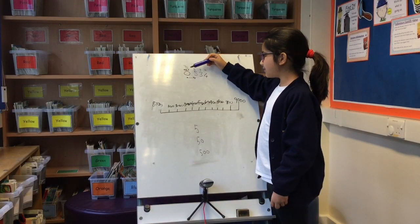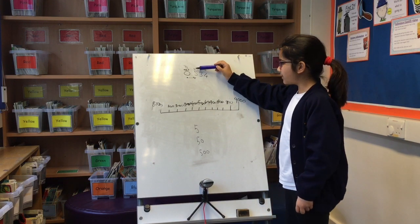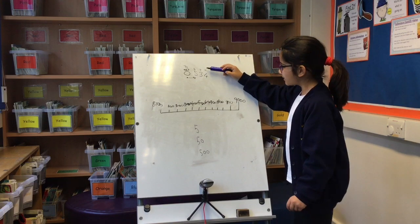When you're rounding to a thousand, you have to look at the hundreds. When you're rounding to the hundreds, you have to look at the tens. When you're rounding to the tens, you have to look at the ones.